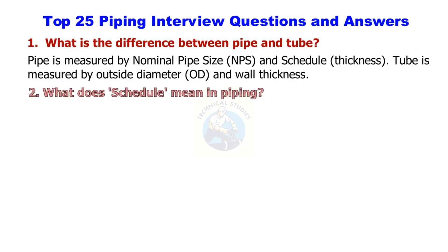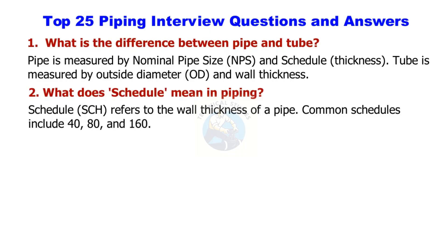What does schedule mean in piping? Schedule (SCH) refers to the wall thickness of a pipe. Common schedules include 40, 80, and 160.